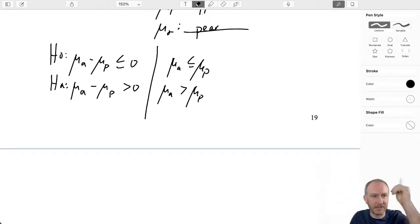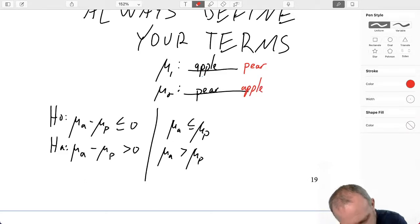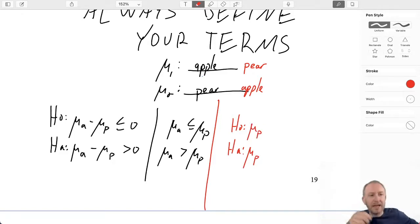What happens if I just switch my definitions around? What happens if I say this is going to be a pear and this is going to be an apple? I can still test exactly the same thing, except now it's going to be a lower tail test. Because now that null and alternative hypothesis, population one is now pear. And if I'm still testing the same thing, I want to test to see if the average weight of an apple is greater than the average weight of a pear. Well, isn't that really the same as testing whether or not the average weight of a pear is less than the average weight of an apple? So here I can take exactly that same test and now I can formulate it in two different ways: an upper tail test or a lower tail test.